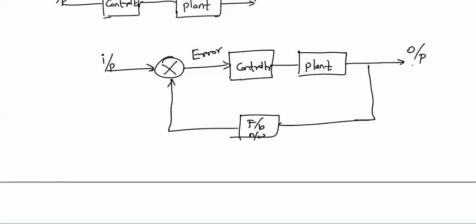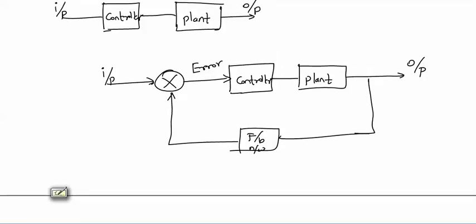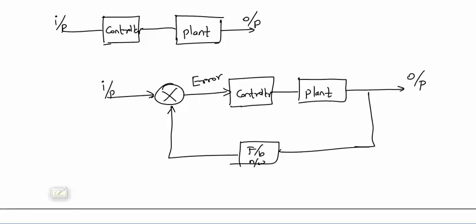Whenever output changes due to certain external conditions, the feedback takes the difference of the reference input and feedback signal to generate an error signal. Based on this error signal, the controller controls the output to give the desired result. In an open loop system there is no feedback, so if output changes you cannot control it, but in a closed loop system you can get desired output by applying feedback.